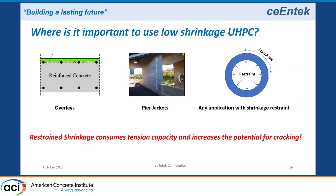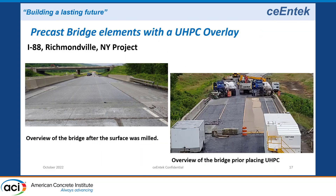I want to talk about applications where low shrinkage is important in UHPC. Anywhere that UHPC or concrete is restrained, low shrinkage matters. In overlays, we want to minimize shrinkage. If you're jacketing anything with a core, or if the UHPC surrounds a restrained element, you will consume tensile capacity of the matrix due to shrinkage. The less shrinkage, the more residual tensile capacity you have available for structural design or strengthening.